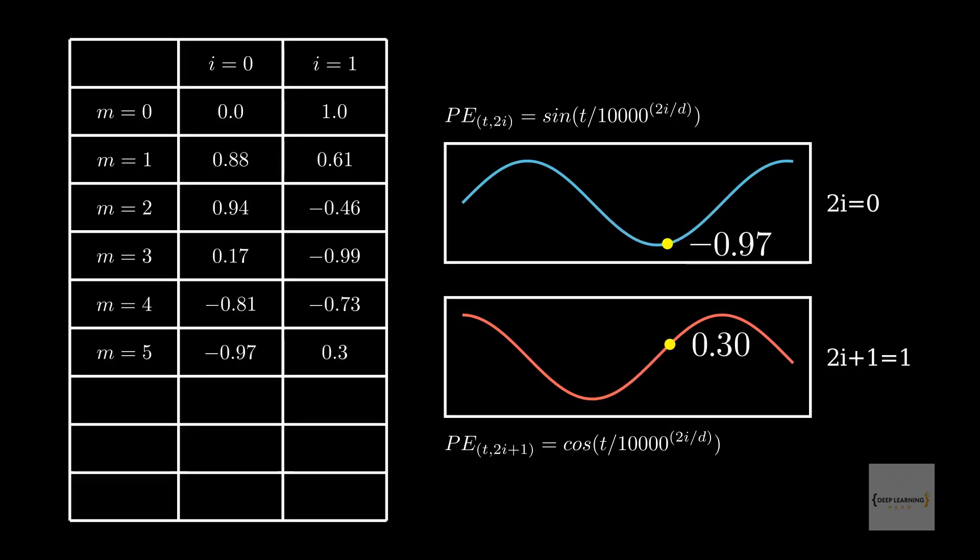If you compute the actual values at m equals 1, 2, 3, and so on, you will get just slightly different results due to precision issues in our computation. This looks like a sensible thing for a positional embedding. The values seem to gracefully go up and down based on their position. So, what's the issue?